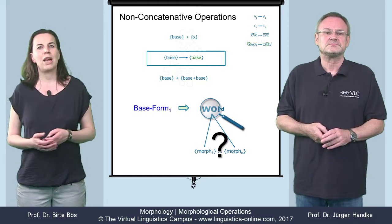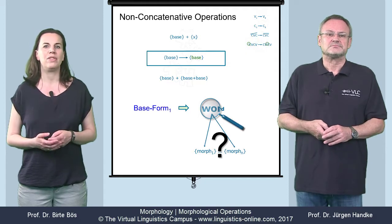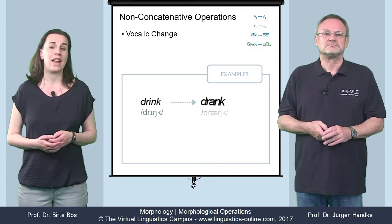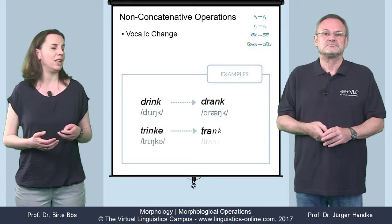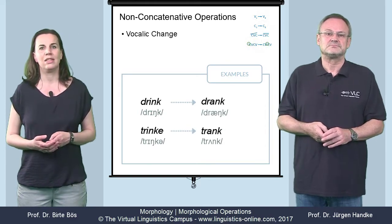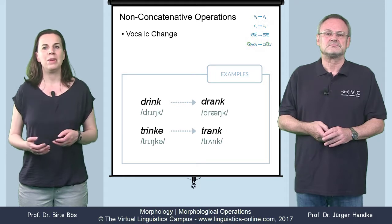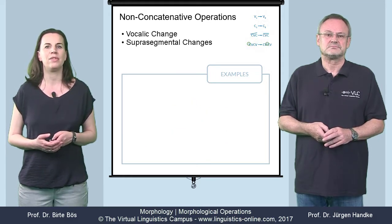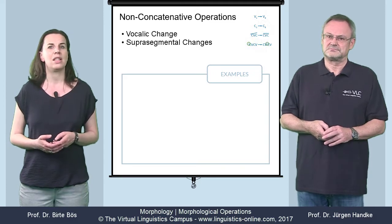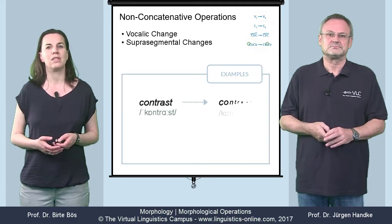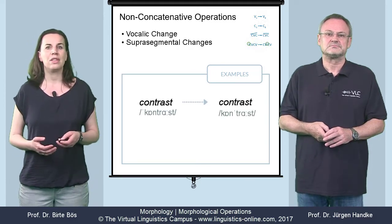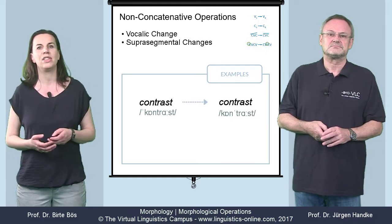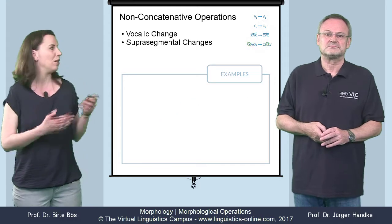One important type of non-concatenative base modification changes the stem vowel, as in present-day English 'drink' / 'drank,' or in German 'ich trinke' / 'ich trank.' Other changes are not phonemic but rather suprasegmental in character. In present-day English we have examples of stress shift, as in 'CONtrast' versus 'conTRAST,' and in Russian such a shift may even change the case, as in the nominative and genitive forms of the word for 'window.'